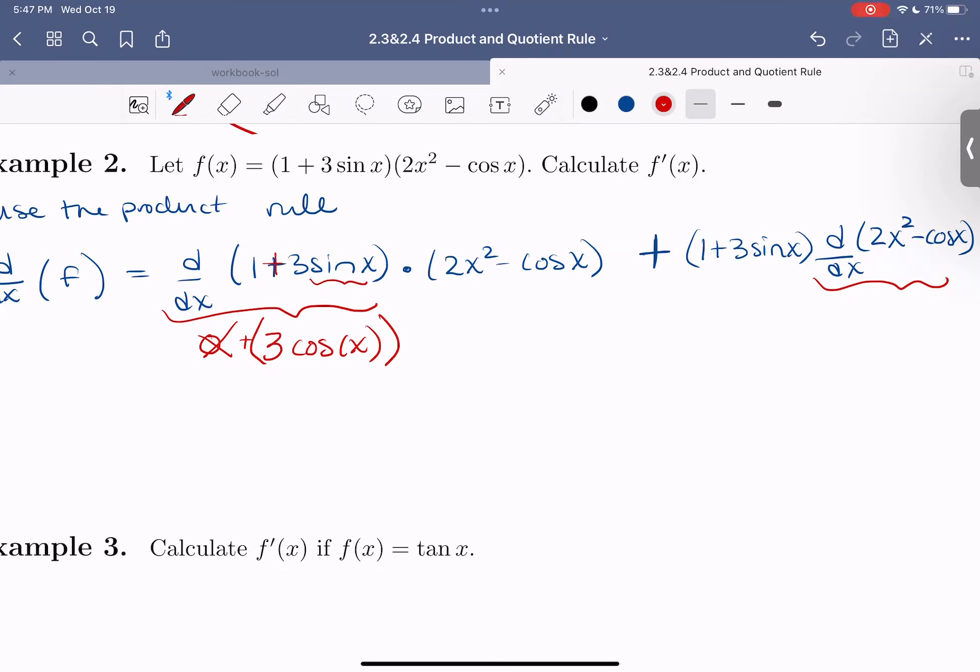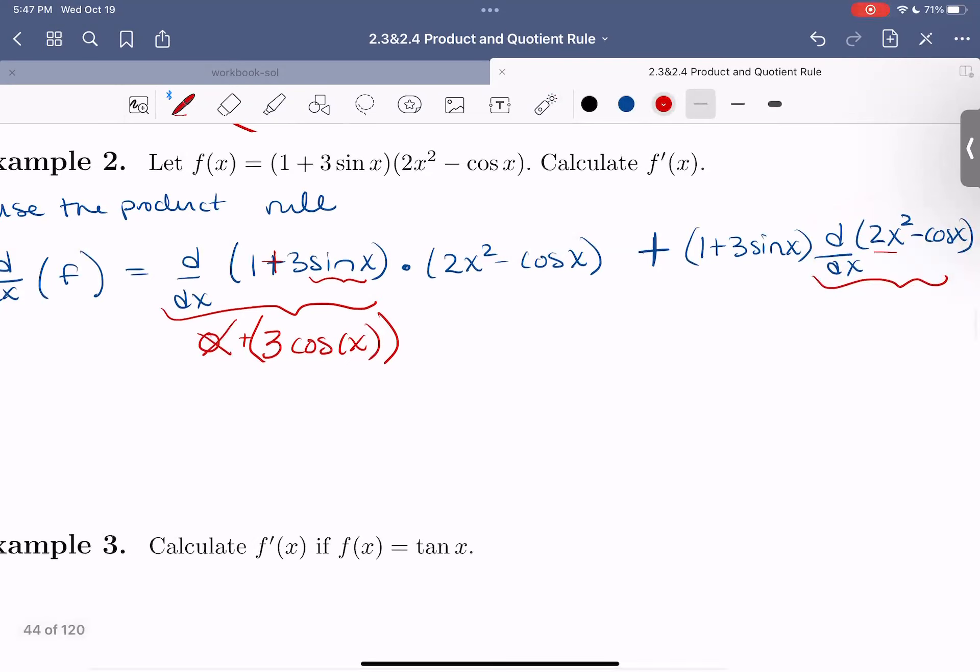Now derivative of this second part is going to be derivative of this first term 2x². So that 2 comes down. We get 2 times 2 times x. And then our exponent is 2 minus 1, which is just 1. And then minus derivative of cosine. Recall derivative of cosine is negative sine. So with that extra negative, this becomes positive and we get positive sin x.